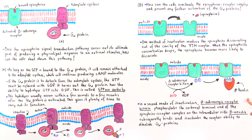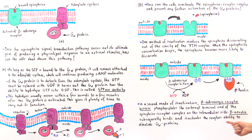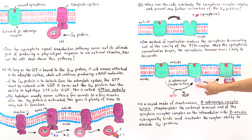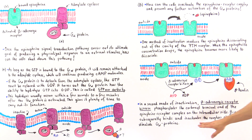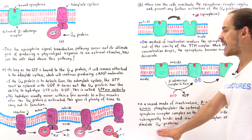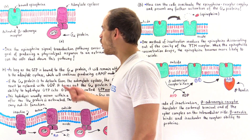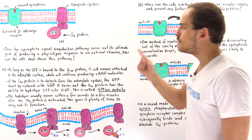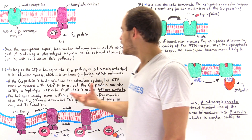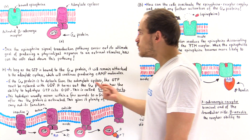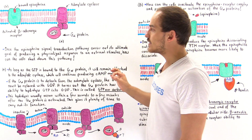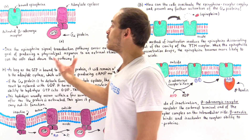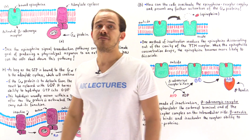So in this second mode of inactivation, the beta-adrenergic receptor kinase phosphorylates the carboxyl terminal end of the epinephrine receptor complex on the intracellular side. Beta-arrestin then binds onto these phosphate groups, inactivating the receptor's ability to stimulate alpha-G proteins to transform GDP into the GTP form. These are the different ways cells using the epinephrine pathway can deactivate or shut down the pathway, thereby preventing different types of negative side effects, as will be discussed in a future lecture.